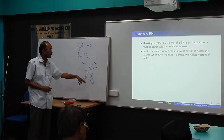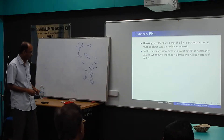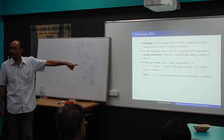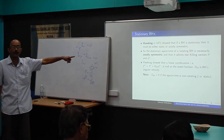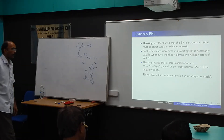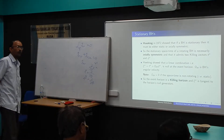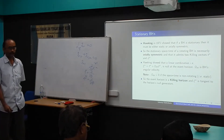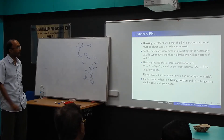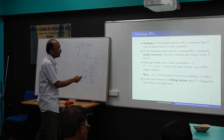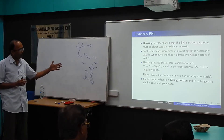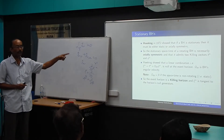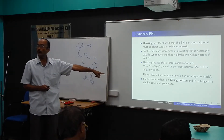ω_H is the angular velocity of the rotation of the black hole. If ω is zero, it is non-rotating and static. The event horizon is a Killing horizon: the Killing vector ξ^α = t^α + ω_H φ^α is tangent to the horizon null-generators, since the event horizon is a null hypersurface.